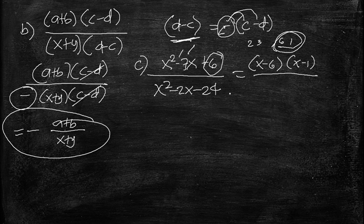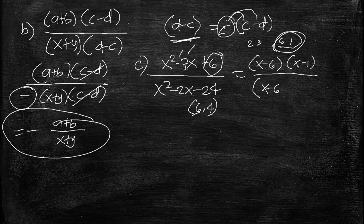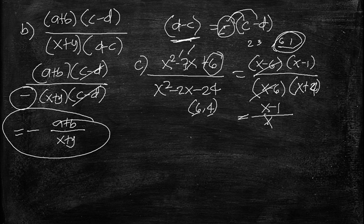For the denominator x squared minus 2x minus 24, we find factors of 24. The factor pair 6 and 4 works because 6 minus 4 equals 2. So the denominator factors as (x minus 6)(x plus 4), giving a result of negative 2x. We cancel the common factor (x minus 6). The result of letter C is x minus 1 over x plus 4.